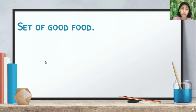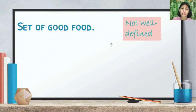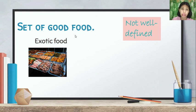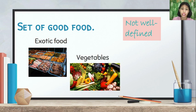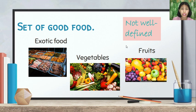'Set of good food' is not well-defined. We don't have the same definition of good food. I can say exotic food is good food, but for you it's not. You can say vegetables are good food, but for me it's not. You can say fruits are good food, but for me it's not. There is no specific distinction — we don't have the same definition of good food, so that is not well-defined.